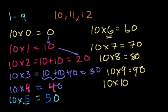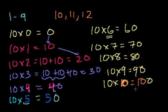In the end, we will have 10 times 10. All the answers follow a pattern — the number multiplied by 10. So 10 times 10 gives you the answer 100. You have all the numbers, and you can follow this pattern. That number is 10.